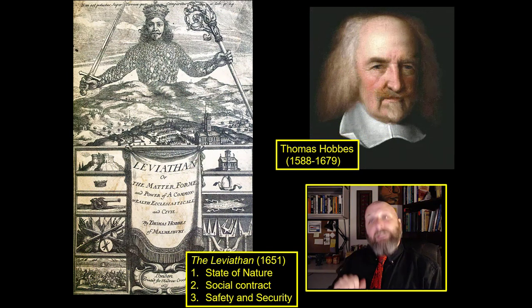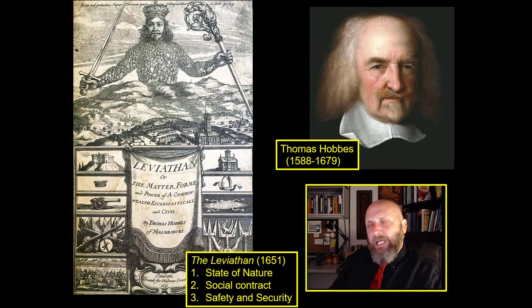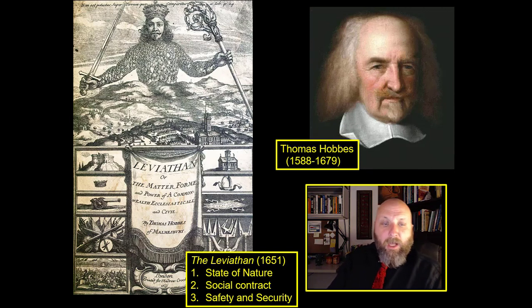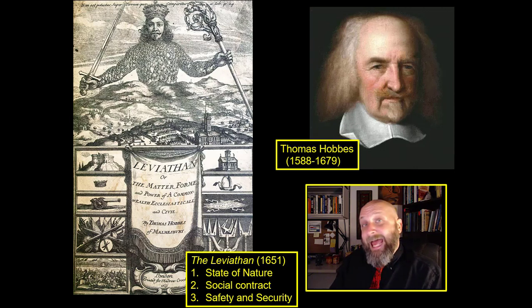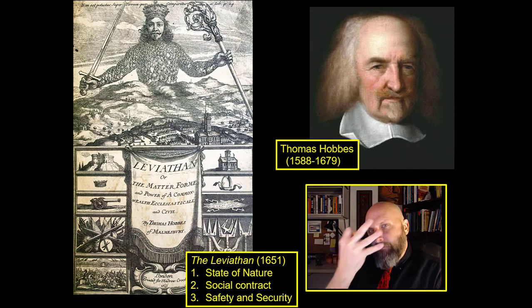We'll start with Thomas Hobbes, right up above me. Thomas Hobbes was a philosopher of the 17th century who tackled the problem of why we have a government. He expressed these philosophies in a book called Leviathan, or The Matter, Form, and Power of a Commonwealth Ecclesiastical and Civil, published in 1651. In the Leviathan, Thomas Hobbes makes three main points.